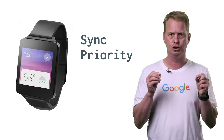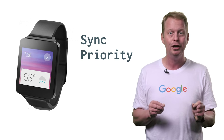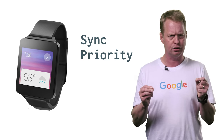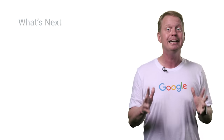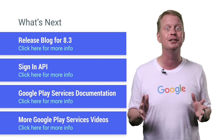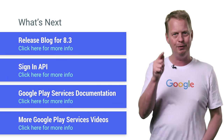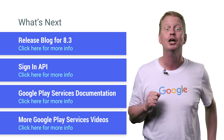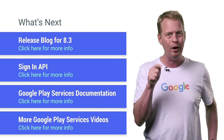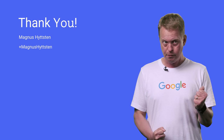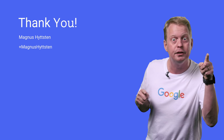Last but not least, we have updates for the Wearable Data API, where you can now specify a sync priority for data items. So if you have something that is really important to sync as quickly as possible, check this API out. And that's it for this release of Google Play Services. Be sure to check out these resources as well. Now it's your turn to build better apps with Google Play Services — go out there and create some great apps, and don't forget to tell us all about it.